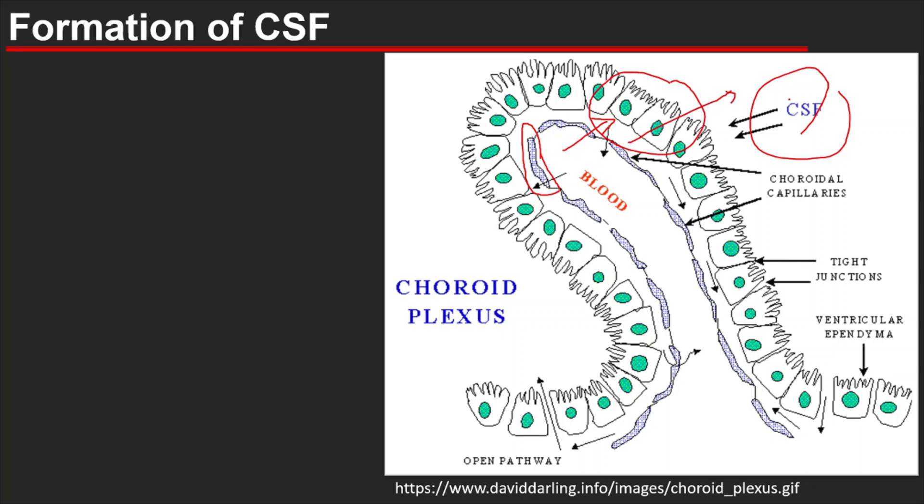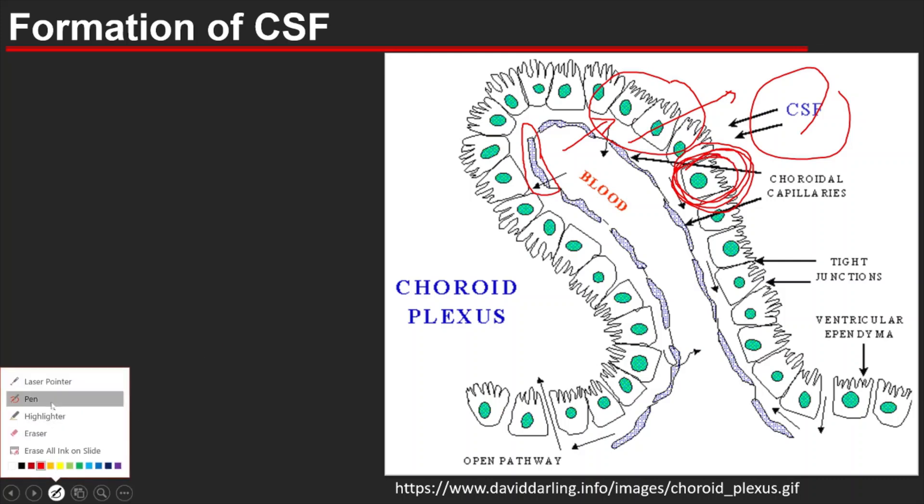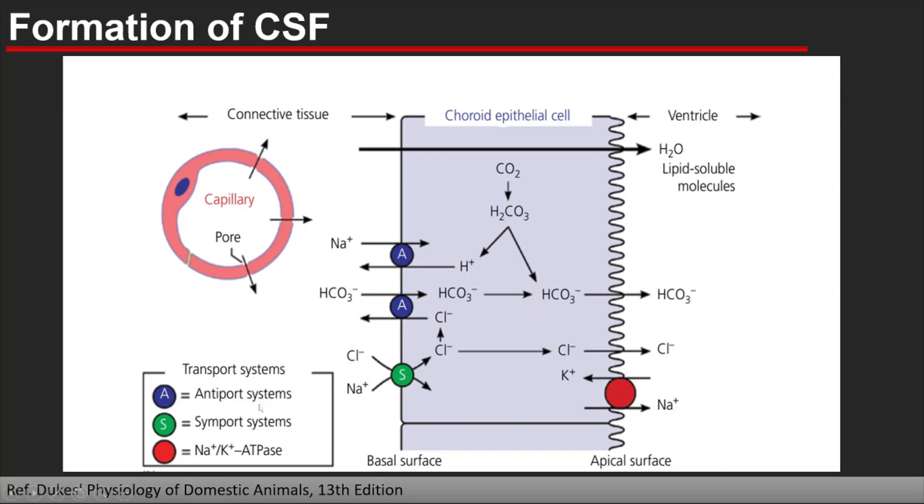Actually, CSF is the filtrate of ependymal or epithelial cells. Let us see what transport mechanisms occur in the epithelial or ependymal cells during the formation of CSF. In the next slide, we will take only one ependymal cell from the choroid plexuses and see what transport mechanisms are present.